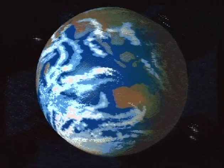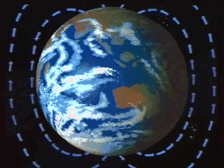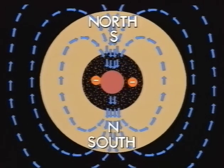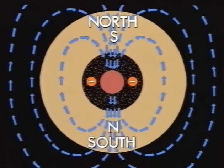Knowing how a solenoid produces a magnetic field, we can work out what is going on in the centre of the Earth. You may have to reverse your thinking to realise that the north geographic pole is actually the south magnetic pole. In the centre of the Earth is a swirling charged mass. The molten core is spinning anti-clockwise. To produce the Earth's magnetic field, the mass must have a negative charge.